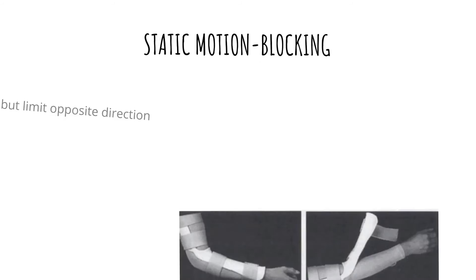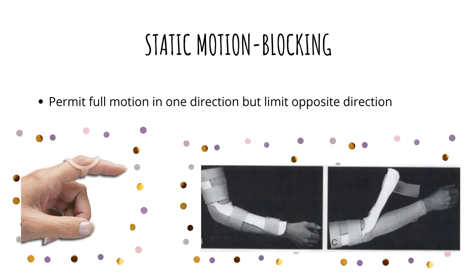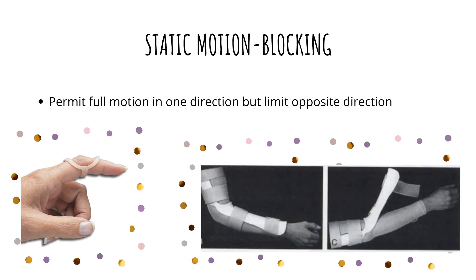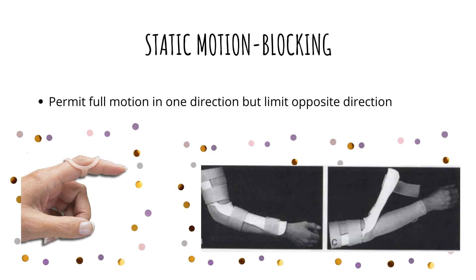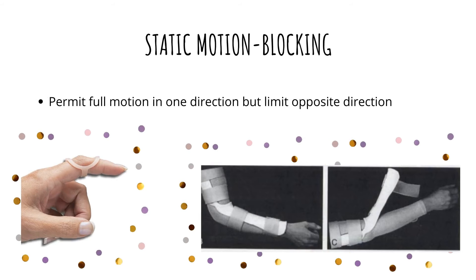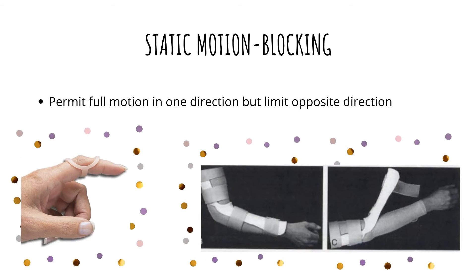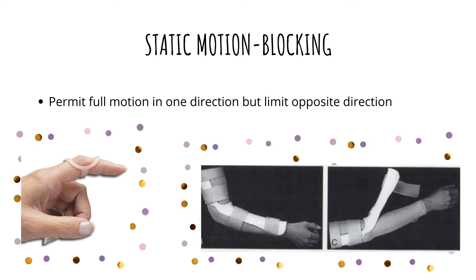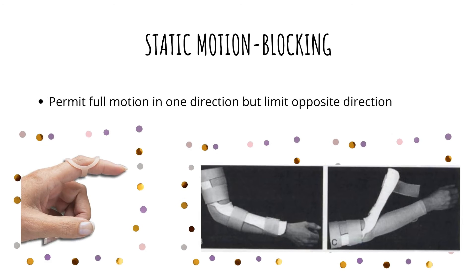The next category is the static motion blocking orthosis. This type permits full motion in one direction but limits the opposite direction. For instance, in the figure-of-eight finger-based orthosis, the upper PIP is extended to the limit of the extension block; however, the lower PIP flexion is unrestricted. Another example is the elbow flexion blocking orthosis, wherein the elbow is free to extend out of the orthosis.